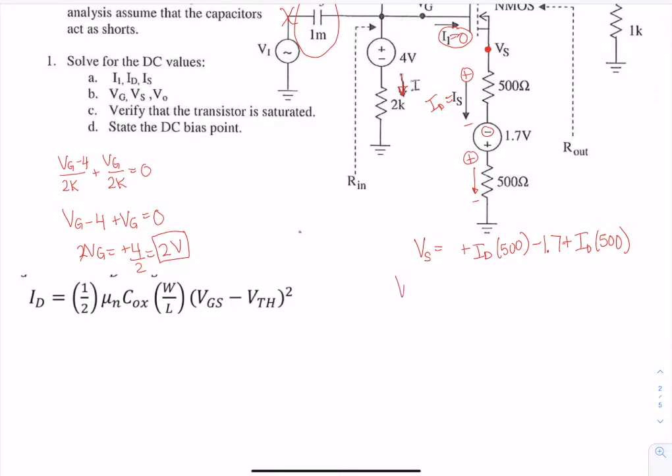And now we can write VGS. Remember it's the first subscript minus the second subscript, so that's going to be 2 minus this quantity of VS. I'm going to combine the 500s. So this is minus ID times 1k, and then plus 1.7.